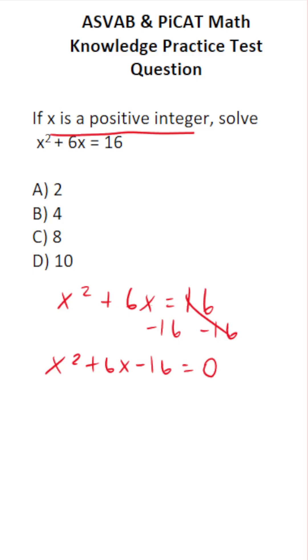We have a quadratic trinomial with the leading coefficient of 1, which means if we could factor it, it's going to look like this.